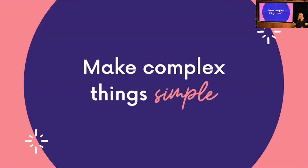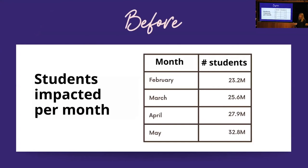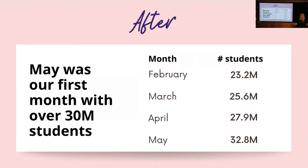Keep making complex things simple through any data you share. For instance, a table showing students impacted per month is fairly obvious, but what conclusion do you want the audience to draw? Highlight it explicitly — for example, 'May was our first month with over 30 million students.' That's a deduction they could draw themselves from raw numbers, but may not necessarily do. Make it really simple.